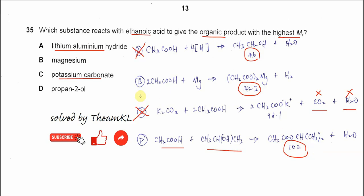So the highest mass, molar mass is the B. Magnesium reacts with this ethanoic acid, and the salt here is the highest mass. Okay, that's all. Thank you.